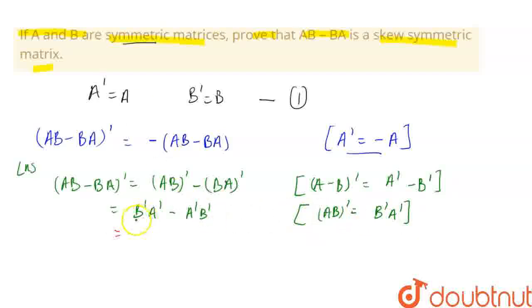Now we know that B transpose equals B and A transpose equals A. So, we can write it as BA minus AB using equation 1.